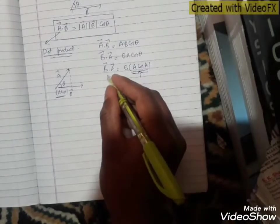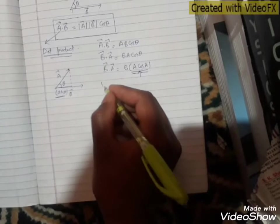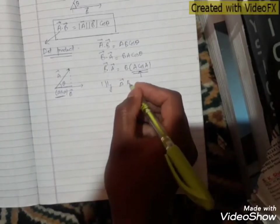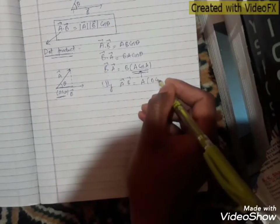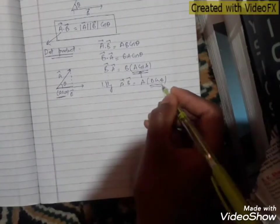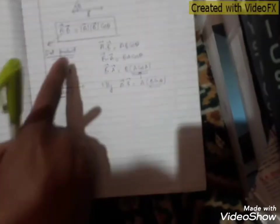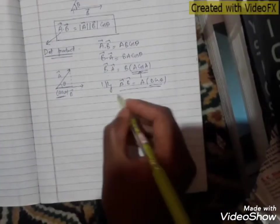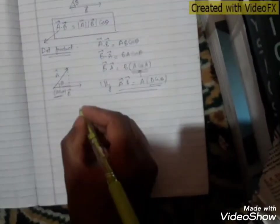Therefore, B dot A can be written as B times A cos theta. Similarly, A dot B equals A times B cos theta, where B cos theta is the scalar component of vector B along the direction of vector A. This is how we get the scalar product of two vectors.